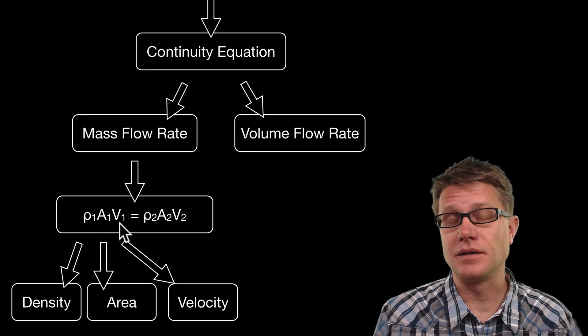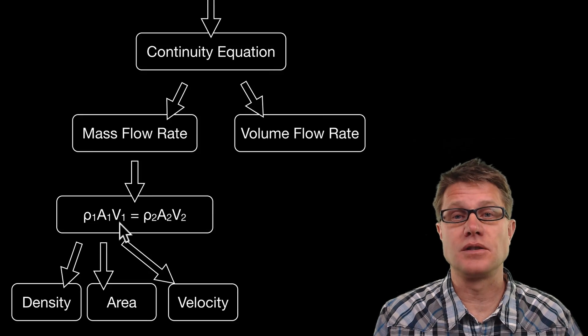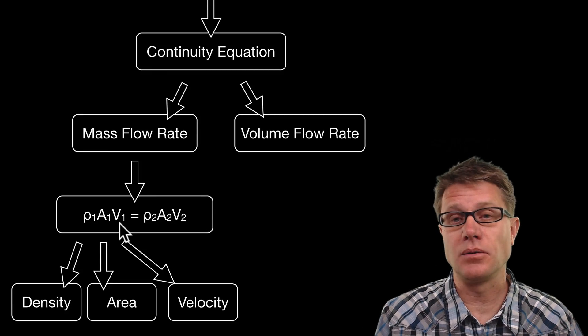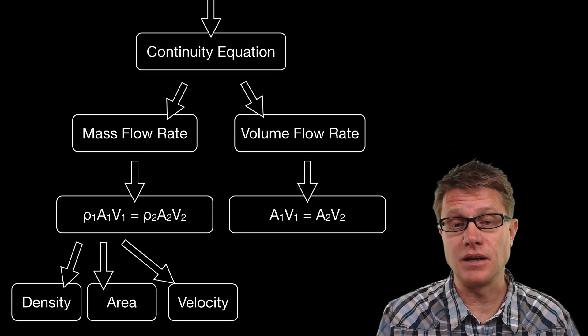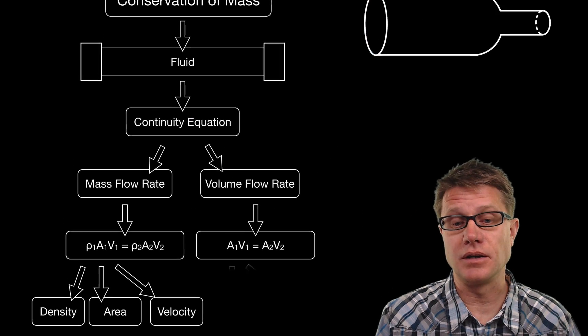Now if you think about water, its density is not going to vary as it is moving through a pipe. And so lots of times you will see it represented as the volume flow rate. We have gotten rid of the density and so it is simply the cross-sectional area times the velocity.